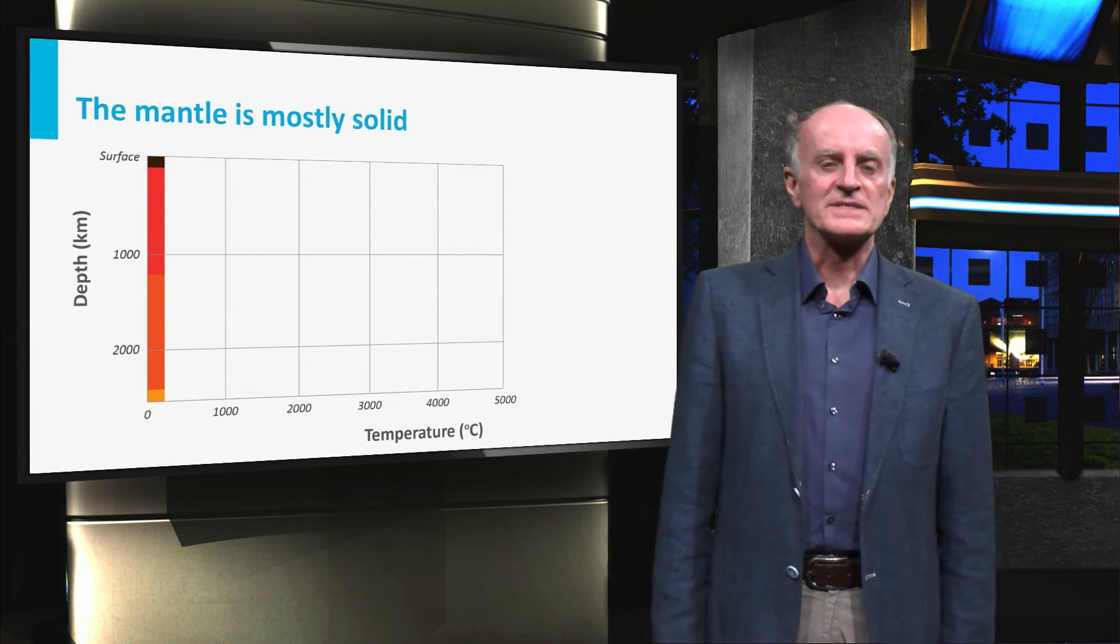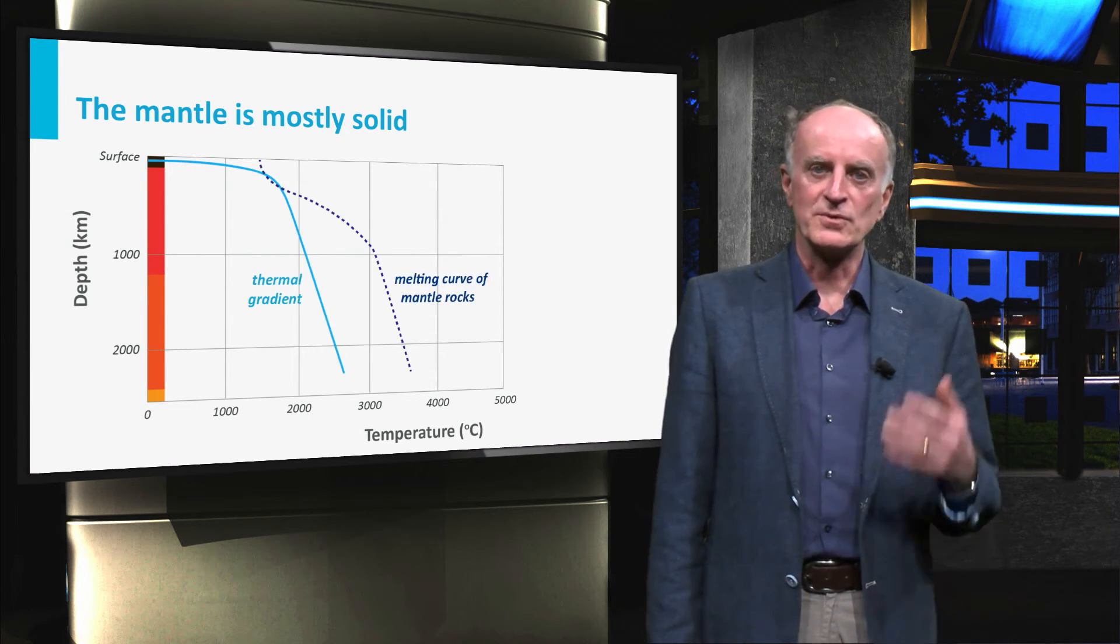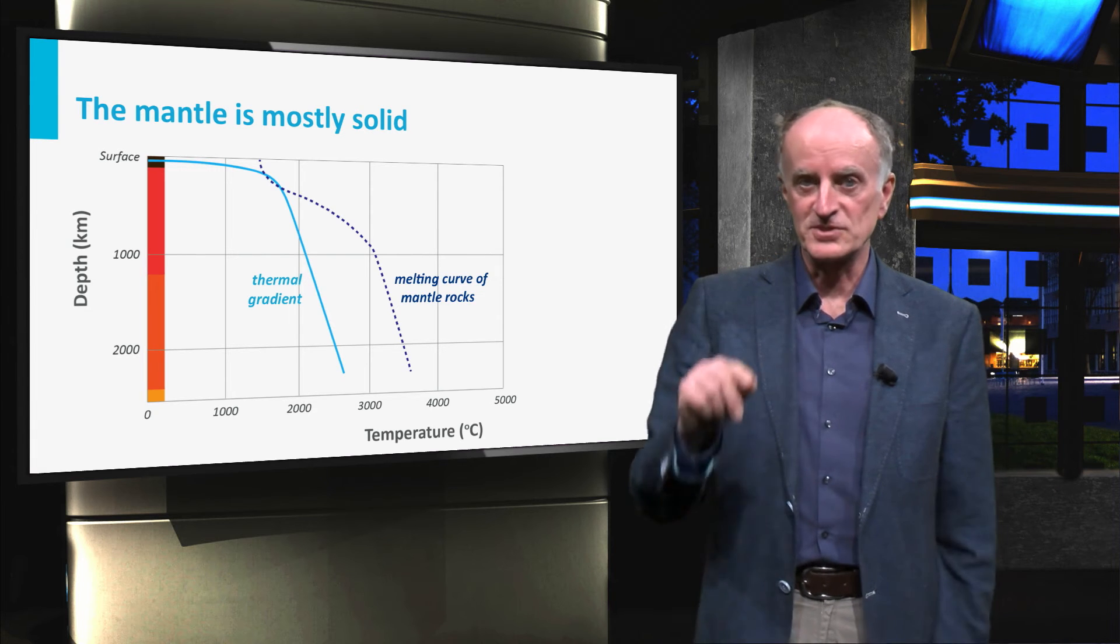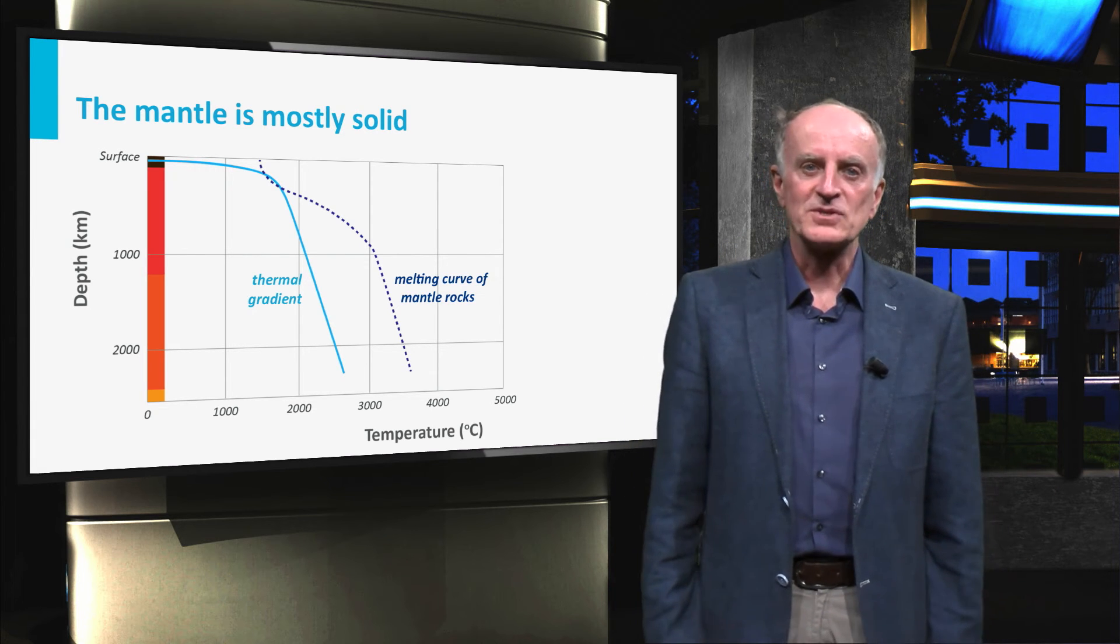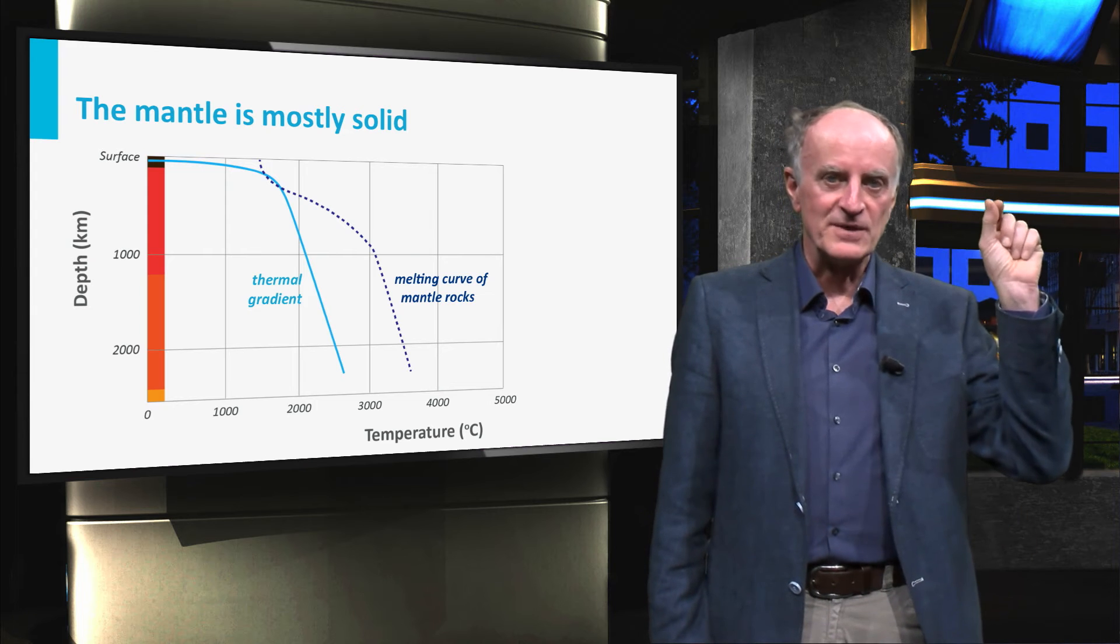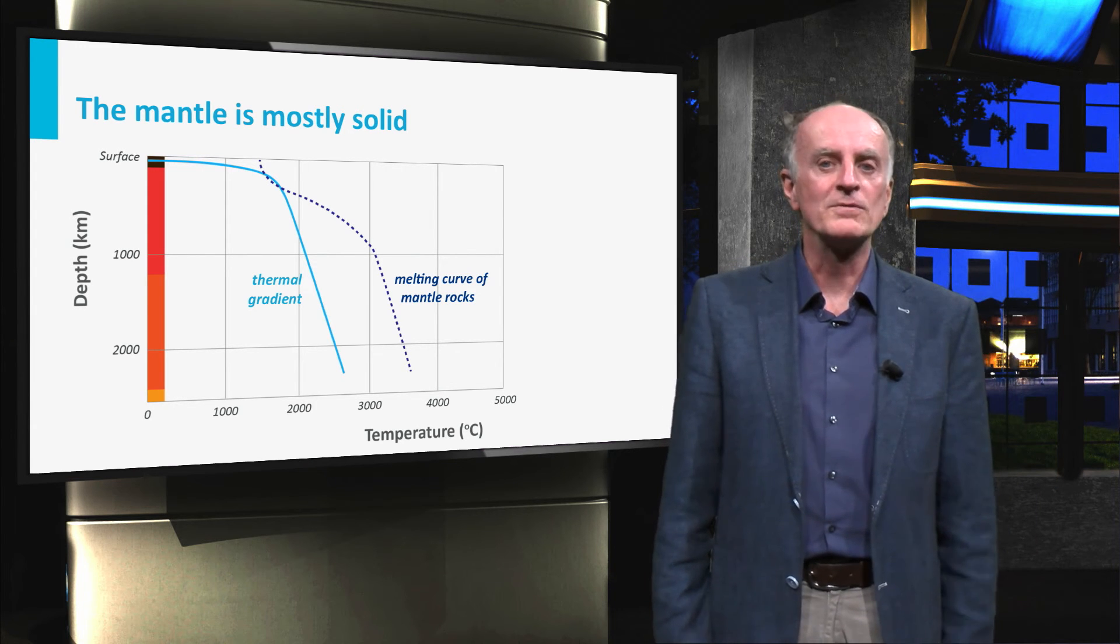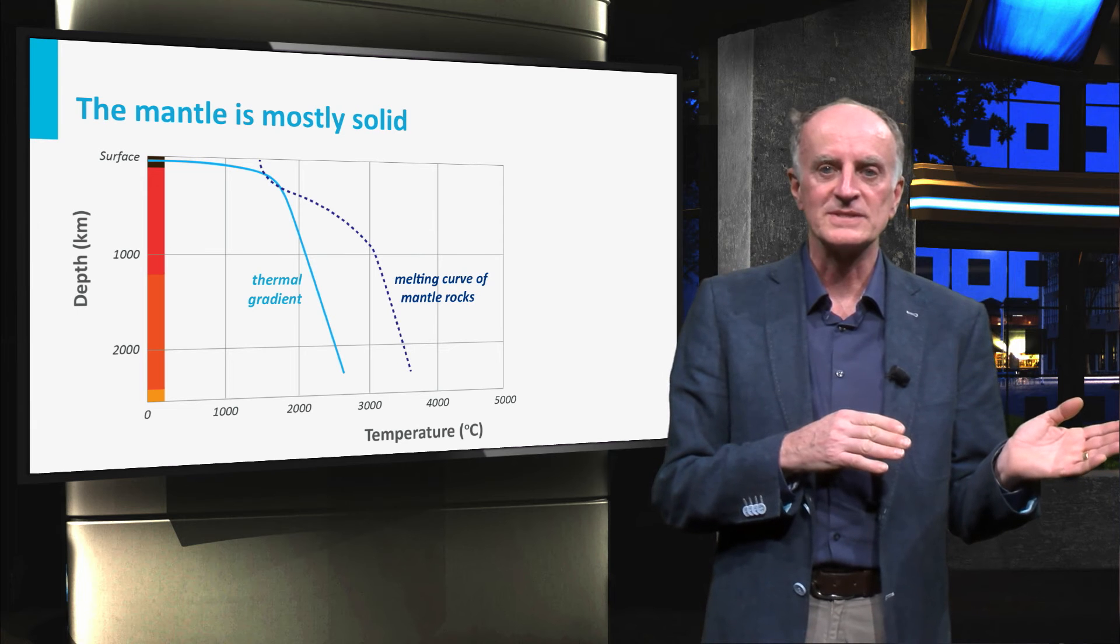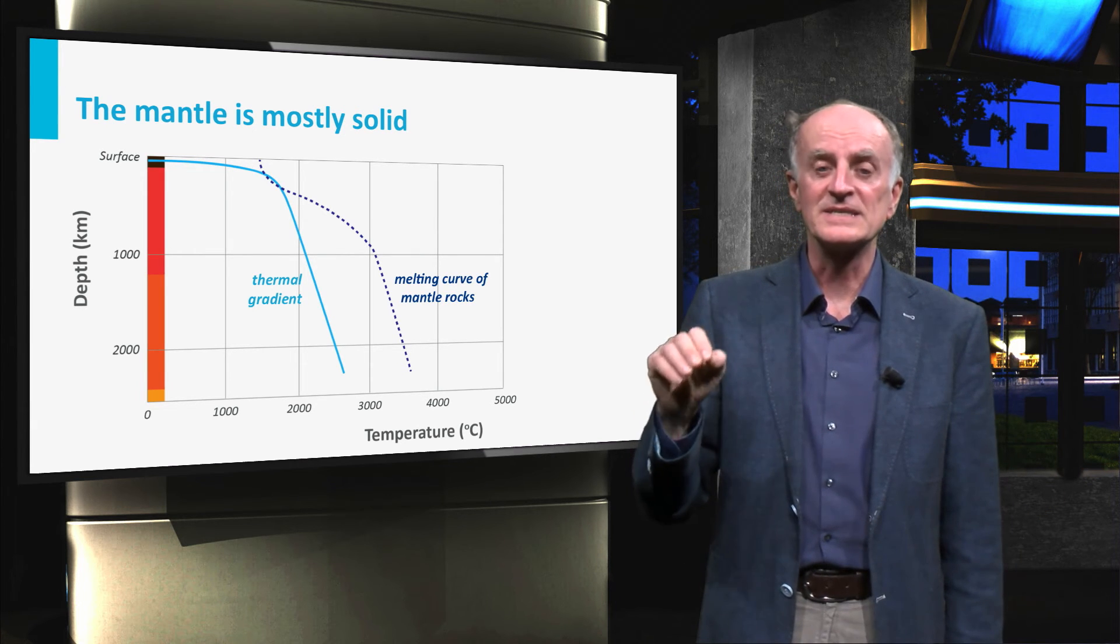What is the physical state of mantle rocks? In the plot you see two curves—the geothermal gradient and the temperatures at which mantle rocks melt. With the exception of a small interval around 100 and 200 km, predicted temperatures are always lower than melting temperatures, indicating that most mantle rocks are in a solid state.